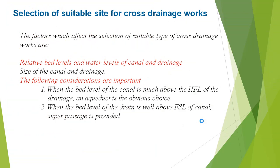For selection of a suitable site for cross-drainage work, the factors that affect the selection depend upon the relative bed level and water level of the canal and drainage, and the size of the canal and drainage. When the bed level of the canal is much above the high flood level of the drainage, an aqueduct is the obvious choice. When the bed level of the drain is well above the full supply level (FSL) of the canal, a super passage is provided.